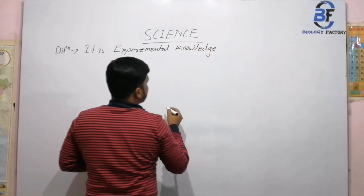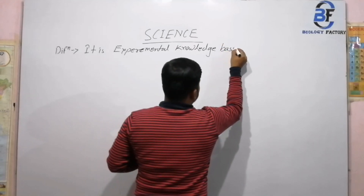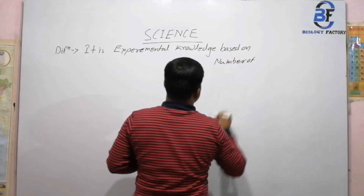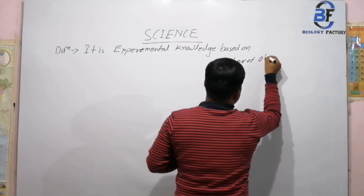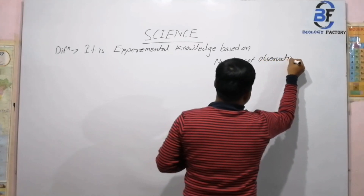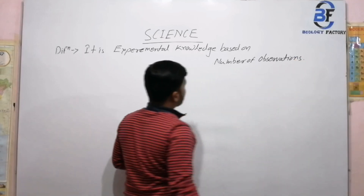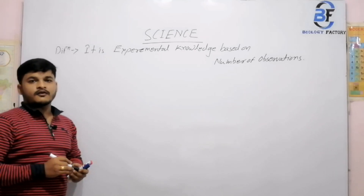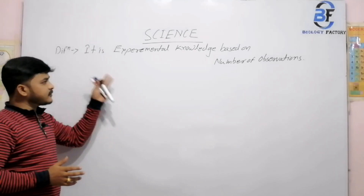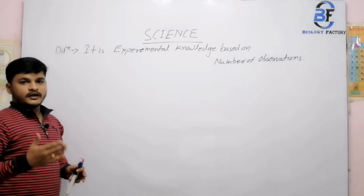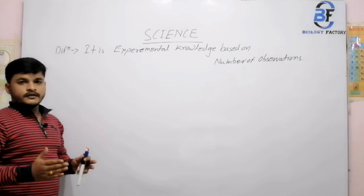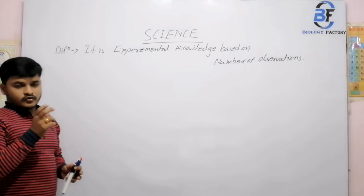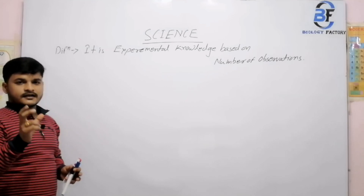Science is experimental knowledge based on a number of observations. If we talk about science, it is only based on a number of experiments. It is a systematic thing through which we get into a number of observations, and through it we contribute to a certain thing. Through science we get proofs — everything is related to an experiment.